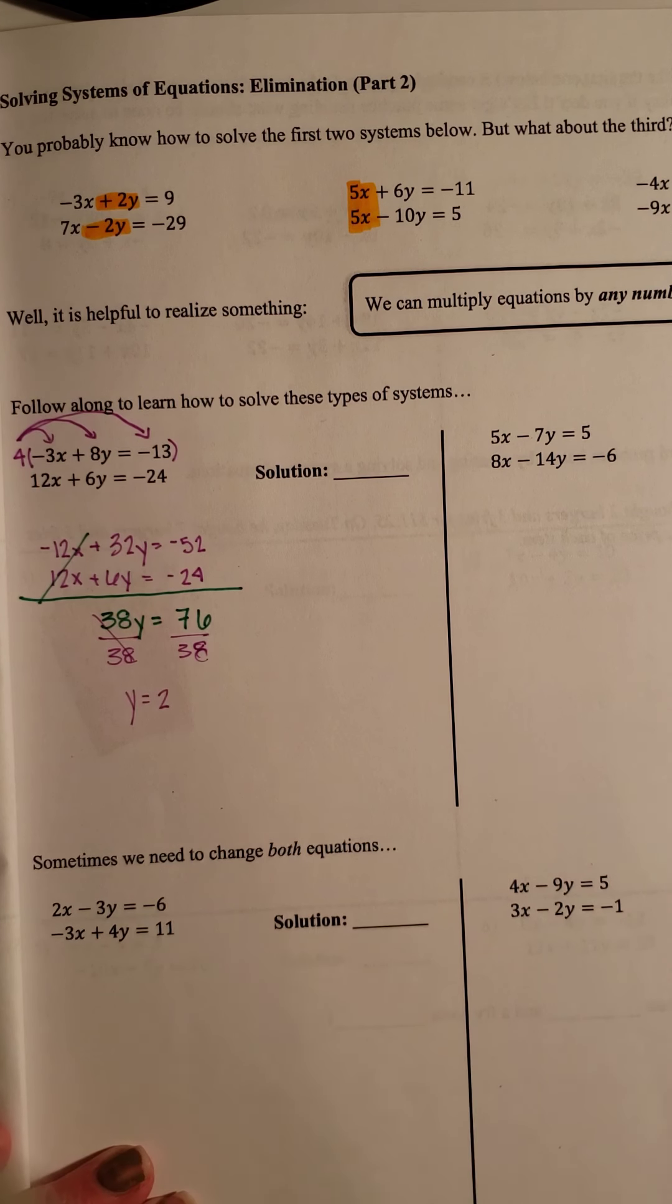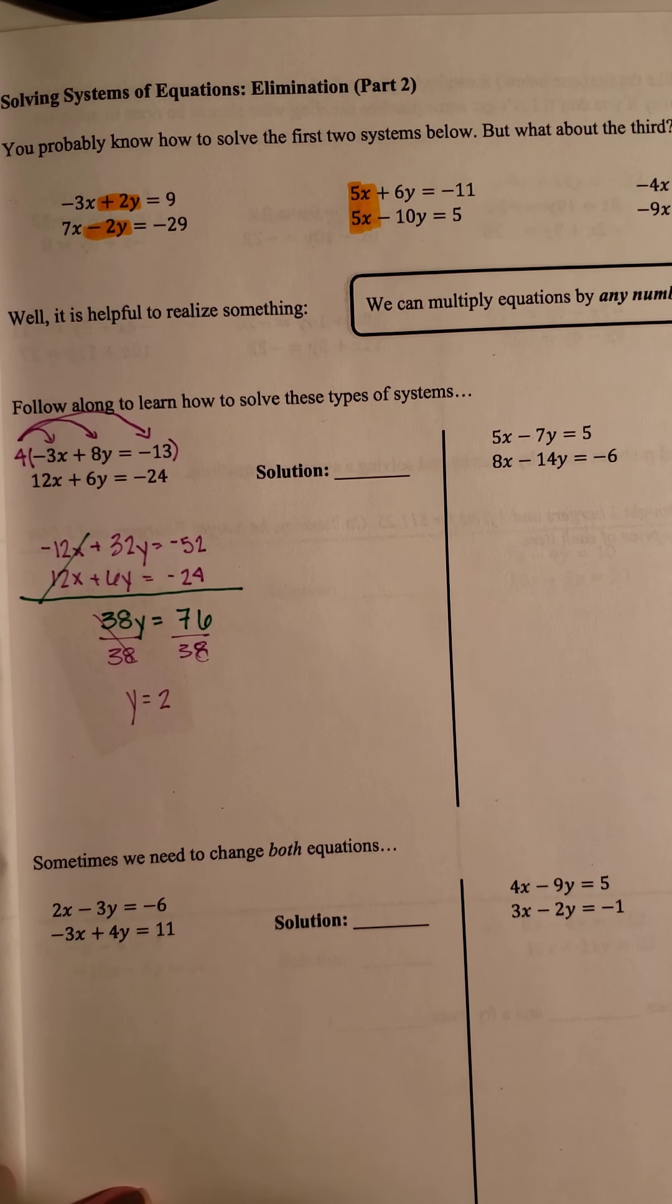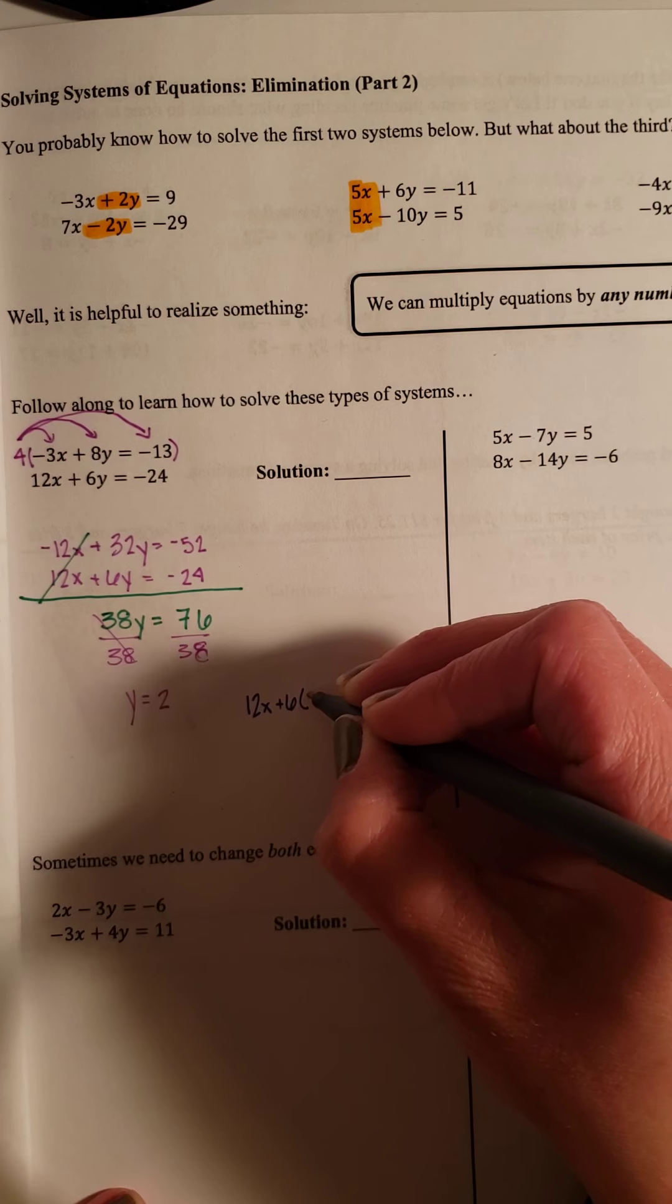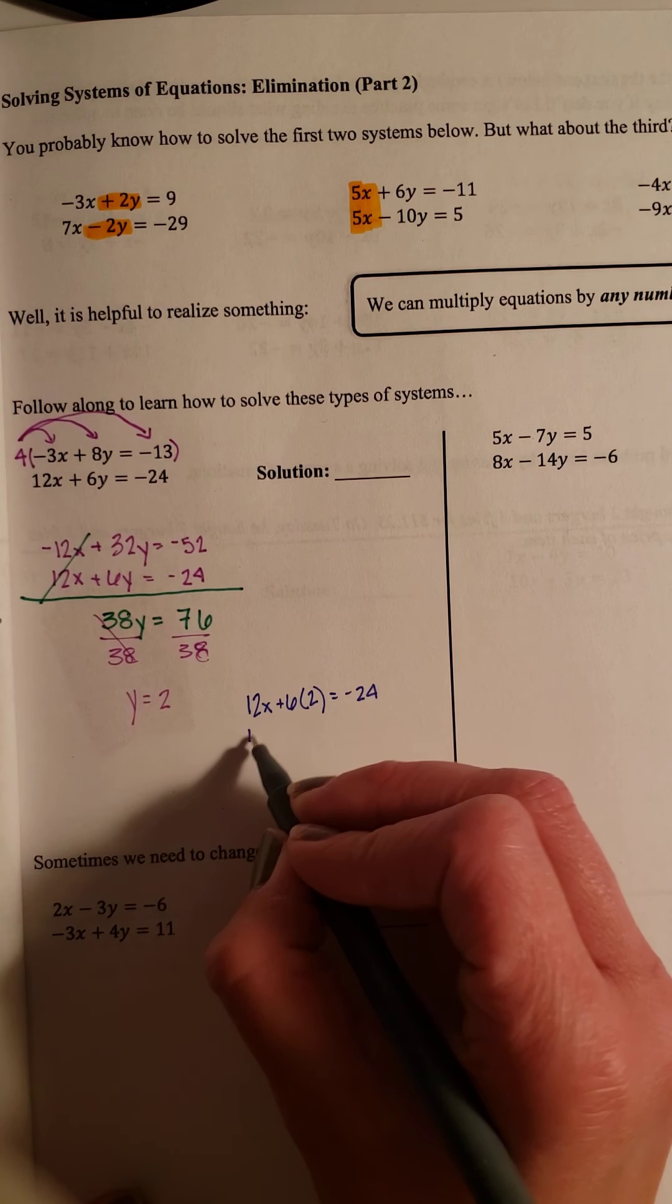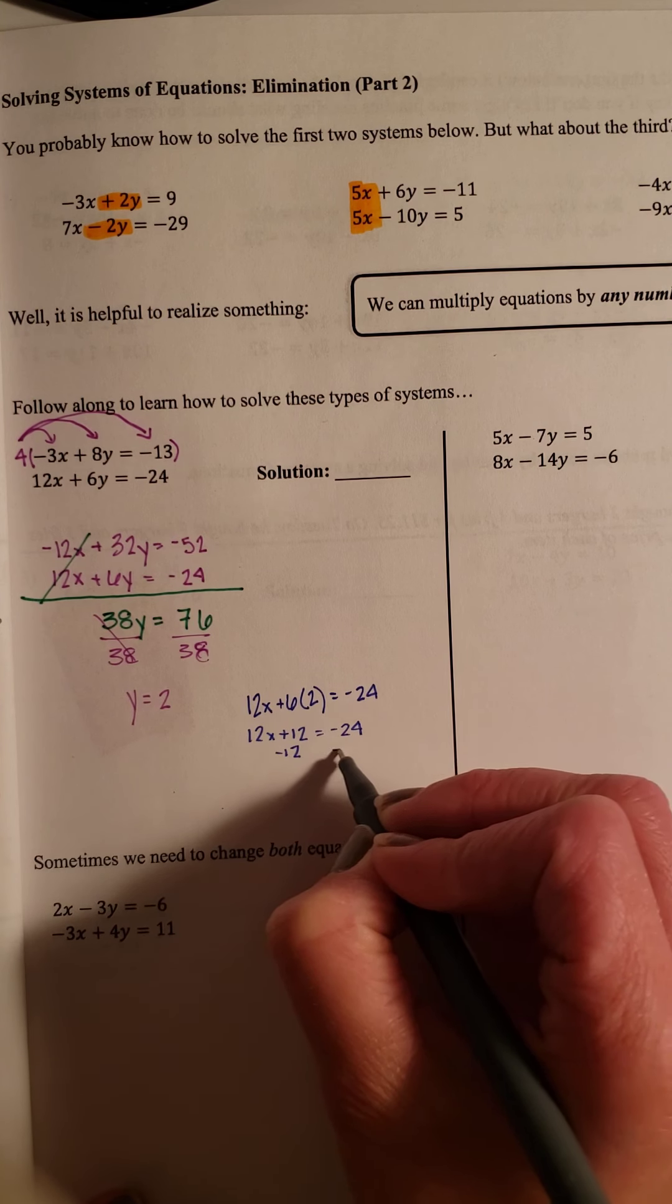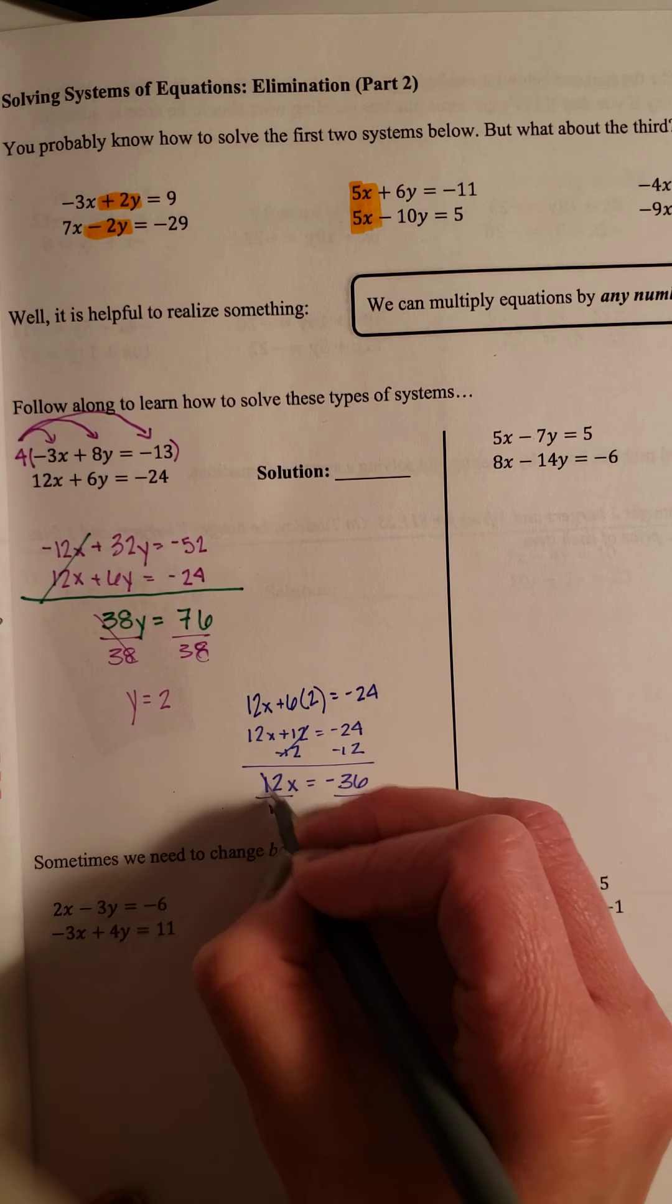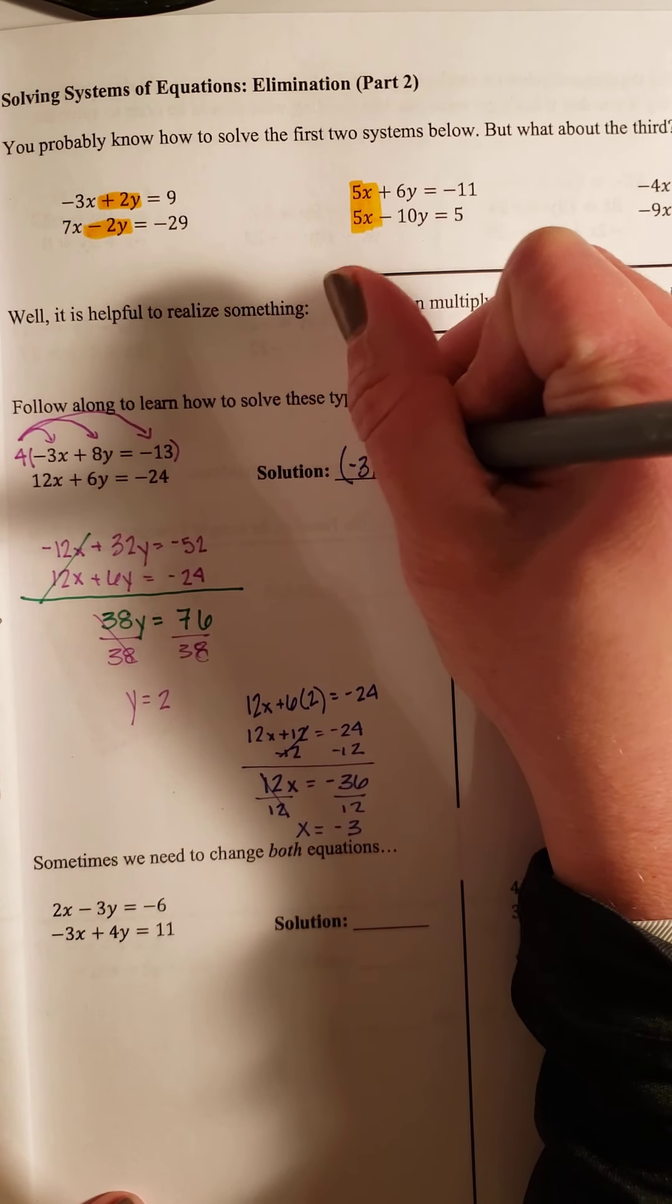And then we can divide by 38, and our Y equals 2. And then, just like we did last week, you just put the 2 into one of the 2 equations. It doesn't really matter which one. I usually try to stay with positive values, positive numbers, so I might take that bottom equation. And I would do 12X + 6, instead of Y, I'm going to put the 2 in, equals -24. 12X + 12 = -24, minus the 12. 12X = -36, divided by 12. X = -3. So my solution is (-3, 2).